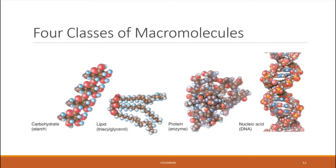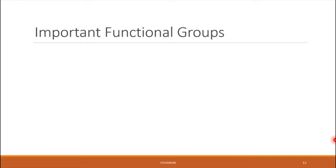That should provide some solid background on how each of these four classes of macromolecules gets formed, and we're going to see these principles of dehydration synthesis reactions occur over and over again with each category. The last foundational piece we need to cover before getting into the details is functional groups — specific patterns of bonded atoms seen over and over again in nature. I want you to be able to recognize four such patterns and know their names.